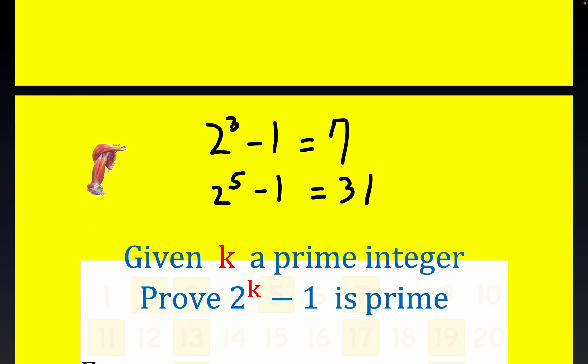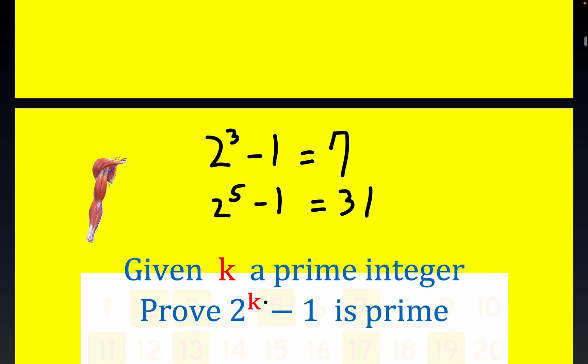And again, 2 squared minus 1 is, 2 is the only even prime. 2 squared minus 1 is 3, and 3 is prime. So the first three prime numbers give credence to the possibility of this being true. It says, given k a prime integer, prove 2^k - 1 is prime. That happened three times. I listed two of them.